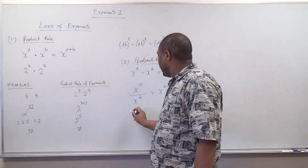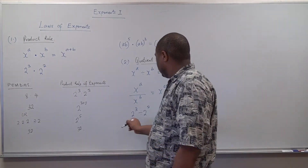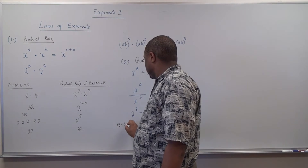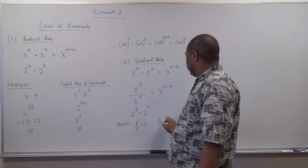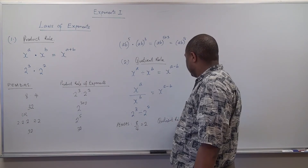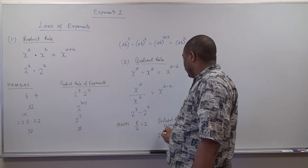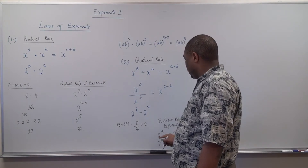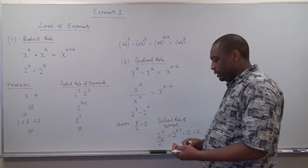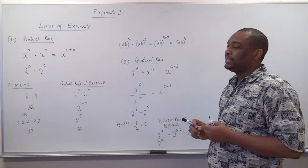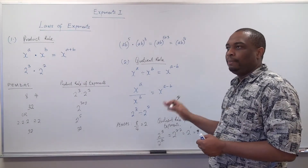So the same thing: if we have 2 raised to power 3 divided by 2 raised to power 2, using PEMDAS it will be 8 divided by 4, which is 2. But if we use the quotient rule of exponents, because they have the same base 2, this will be 3 minus 2, which is 2 raised to power 1, which is 2. They must have the same base — if they don't, you cannot apply the quotient rule or product rule.